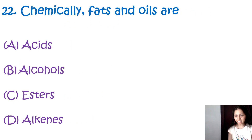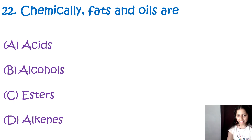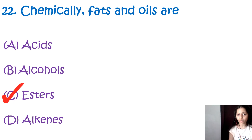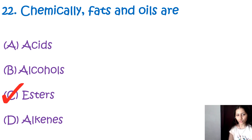Question number 22: Chemically, fats and oils are — alcohols, acids, esters, or alkalis. The correct option is C, esters. Chemically, fats and oils are esters formed by the esterification of fatty acids with glycerol. Each molecule of fat or oil has three fatty acid molecules esterified to the glycerol molecule.